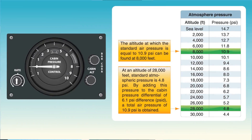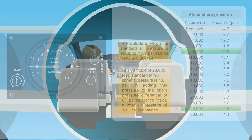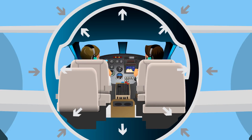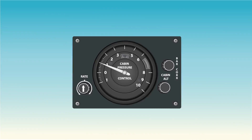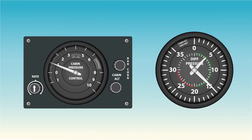The cabin pressure regulator controls cabin pressure to a selected value in the isobaric range, and limits cabin pressure to a preset differential value in the differential range. When an aircraft reaches the altitude at which the difference between the pressure inside and outside the cabin equals the highest differential pressure the fuselage structure is designed for, a further increase in aircraft altitude will result in a corresponding increase in cabin altitude.